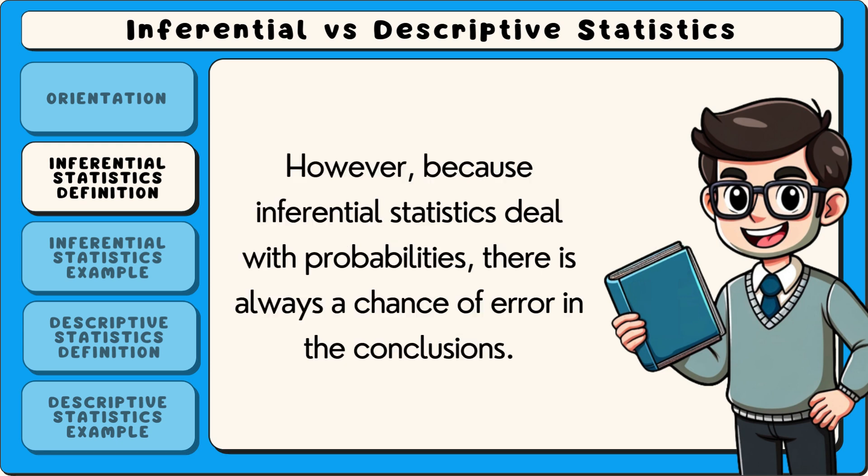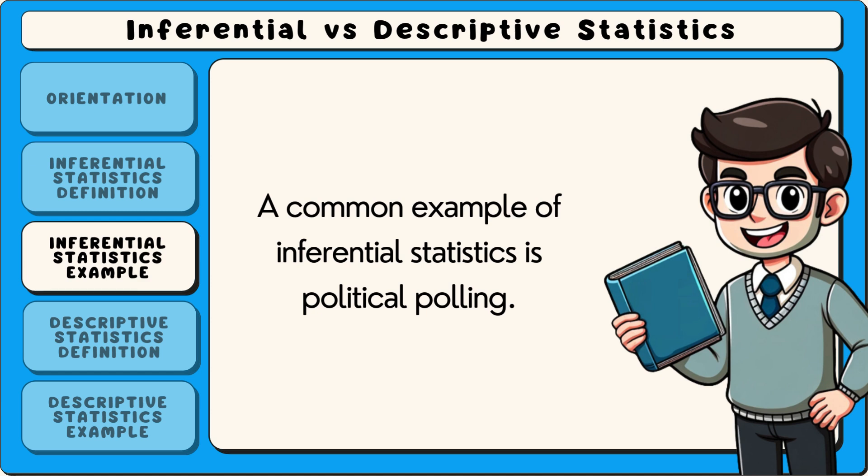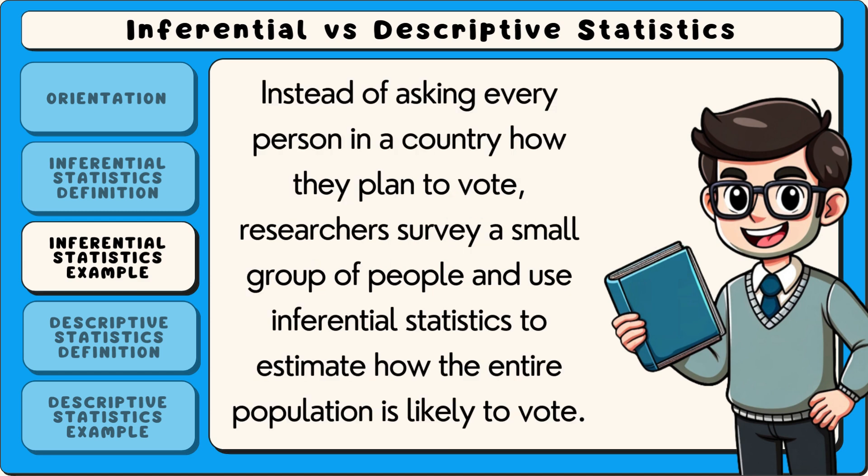However, because inferential statistics deal with probabilities, there is always a chance of error in the conclusions. A common example of inferential statistics is political polling. Instead of asking every person in the country how they plan to vote, researchers survey a small group of people and use inferential statistics to estimate how the entire population is likely to vote.